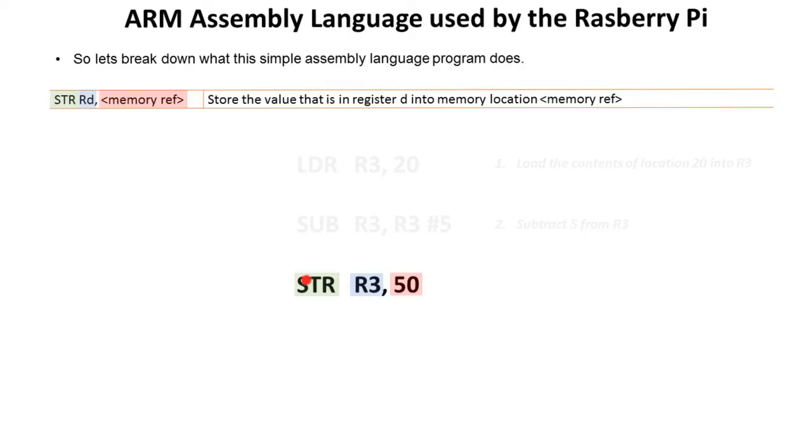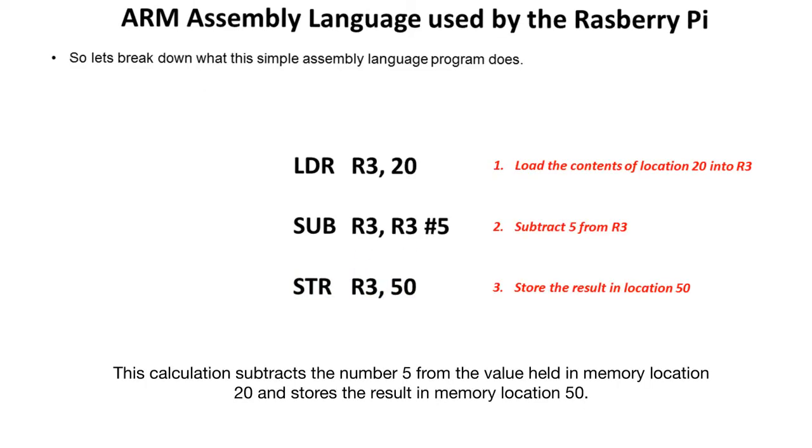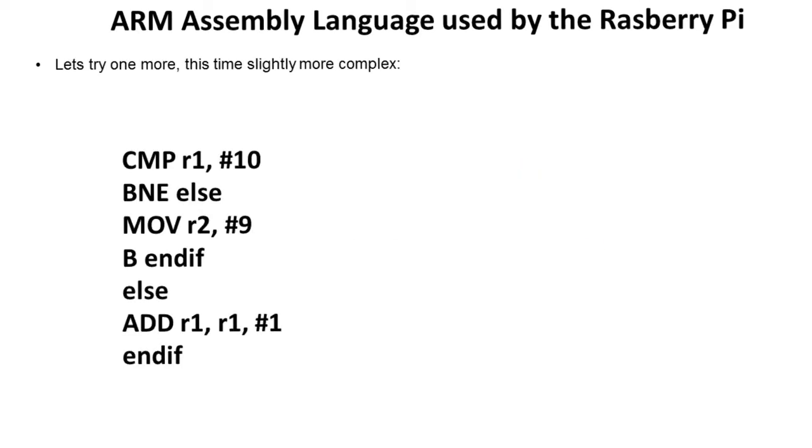We then see a store low-level command, and we're going to store the value held in R3. And we're going to place it in the memory location referred by 50. So we're going to load the contents of 20 into here. We're going to subtract 5 from it and store it back. I'm going to take the contents of there and store it in 50.